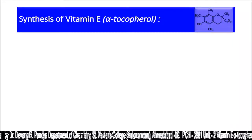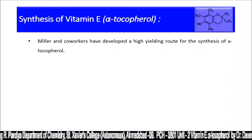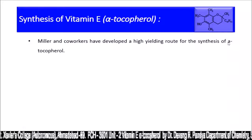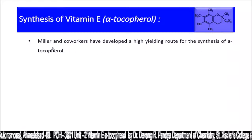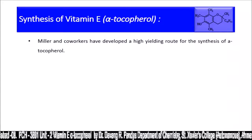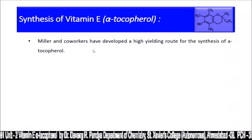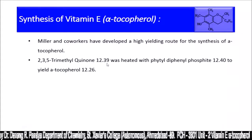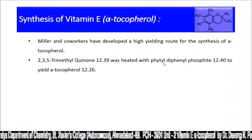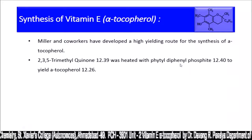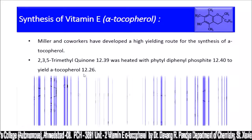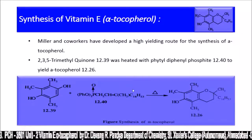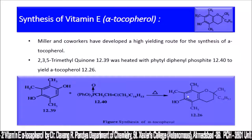For the synthesis of Vitamin E alpha tocopherol, Karrer and co-workers developed a high-yielding route. Note that alpha tocopherol is sometimes referred to by the alpha symbol. 2,3,5-trimethylquinone (structure 12.39) was heated with phytyl diphenyl phosphite (12.40) to yield alpha tocopherol (12.26). This is a straightforward synthesis: the quinone is treated with the phosphite derivative to obtain alpha tocopherol.